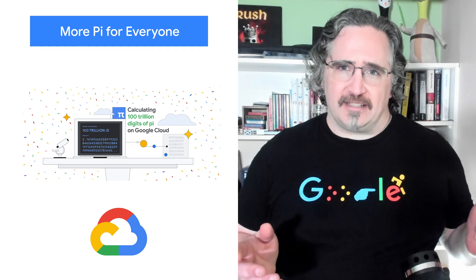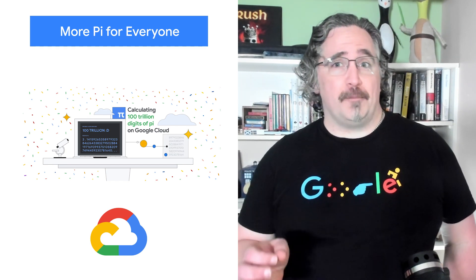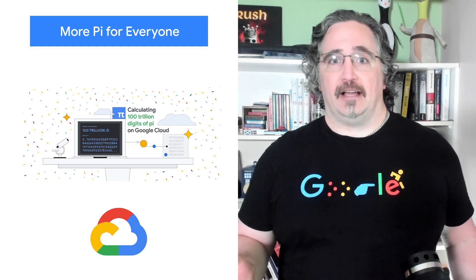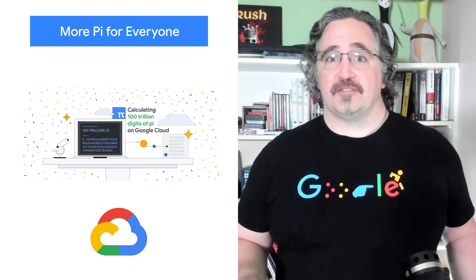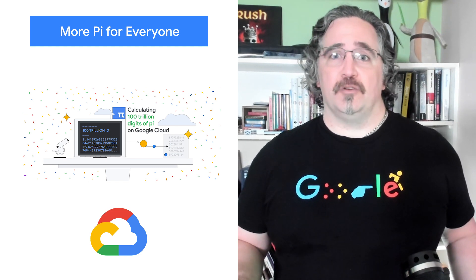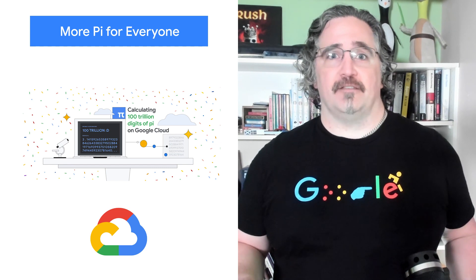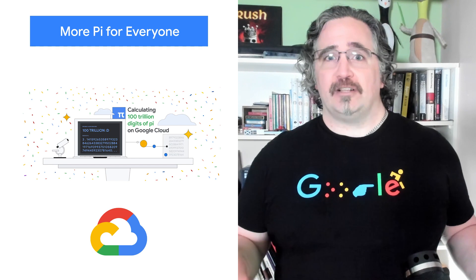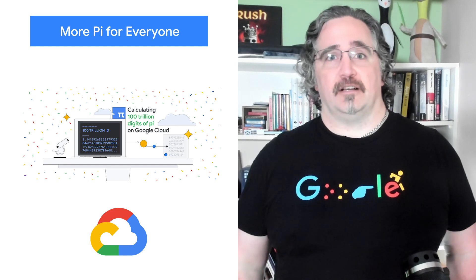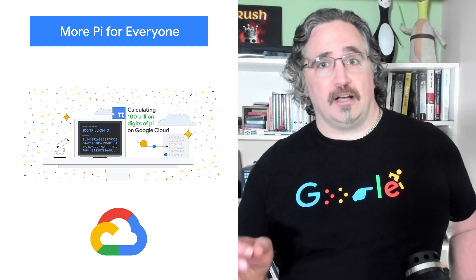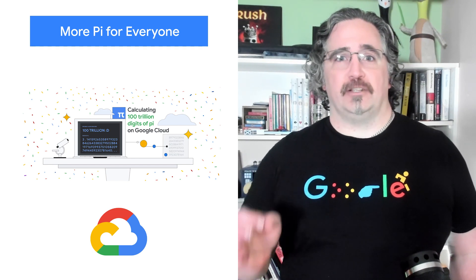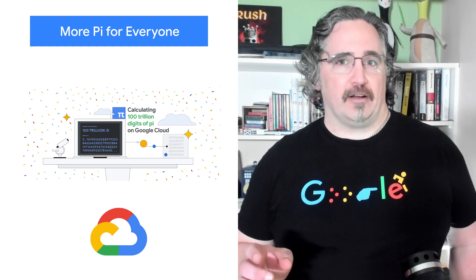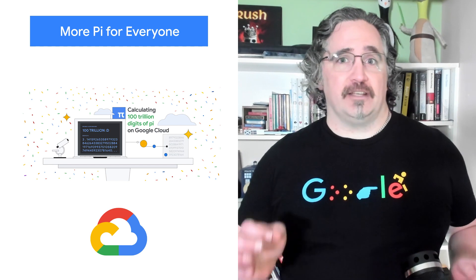In 2019, we calculated 31.4 trillion digits of Pi, a world record at the time. Then in 2021, scientists at the University of Applied Sciences of the Grisons calculated another 31.4 trillion digits of the constant, bringing the total up to 62.8 trillion decimal places. Today, we're announcing yet another record: 100 trillion digits.